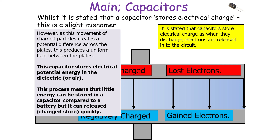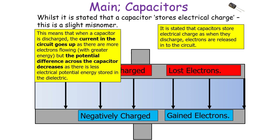The energy stored in a capacitor can be released extremely quickly compared to a battery. When a capacitor discharges, the current in the circuit increases as more electrons flow with greater energy, but the potential difference across the capacitor decreases as less electrical potential is stored in the dielectric.